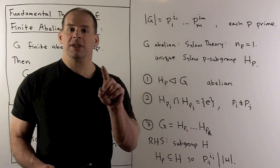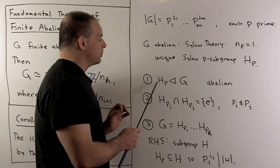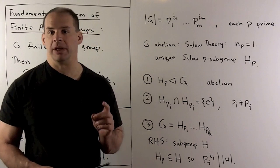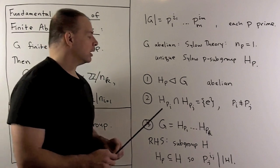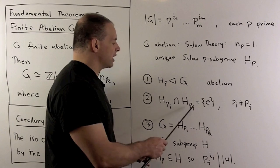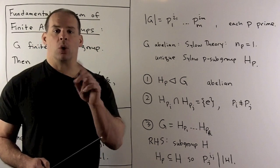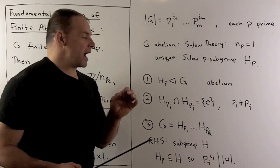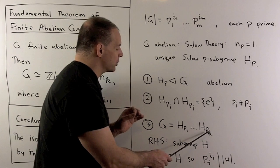We note three things that will give us a direct product. First, H sub p is normal in G, and that follows because G is abelian — every subgroup is normal. Second, the intersection of any two of these Sylow p-subgroups for distinct p gives the identity element, which follows by checking orders in each subgroup. Finally, we can write G as a product of our Sylow p-subgroups.